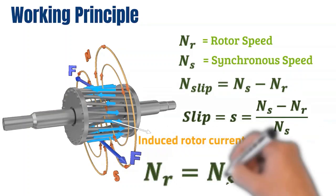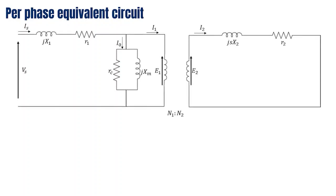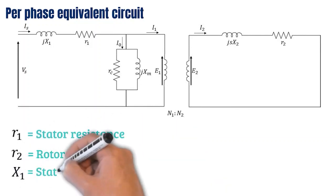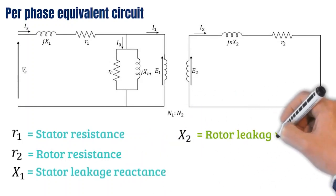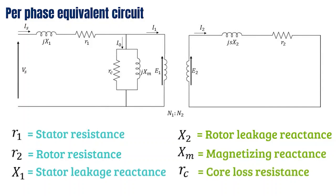The per-phase equivalent circuit of the three-phase induction motor is very similar to the transformer equivalent circuit. All parameters are taken per phase. Vs is the stator voltage, R1 is the stator resistance, R2 is the rotor resistance, X1 is the stator leakage reactance, X2 is the rotor leakage reactance, Xm is the magnetizing reactance, Rc is the core loss resistance, E1 is the stator EMF, E2 is the standstill rotor EMF, Is is the supply current, I1 is the torque-producing current component, I0 is the no-load current, I2 is the rotor current, and N1 to N2 is the effective turns ratio of stator to rotor winding.